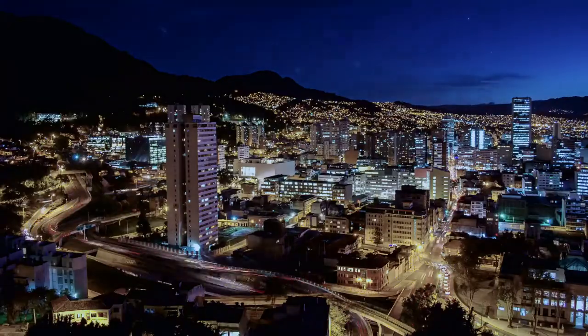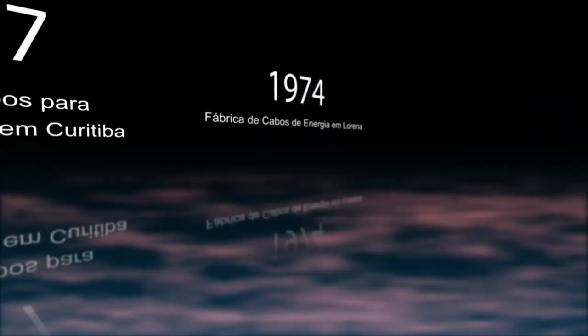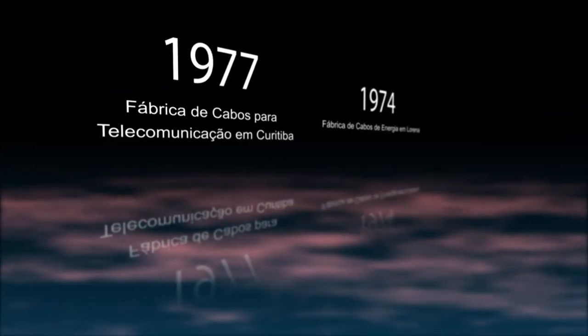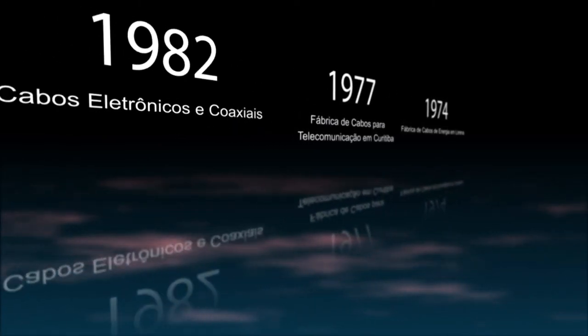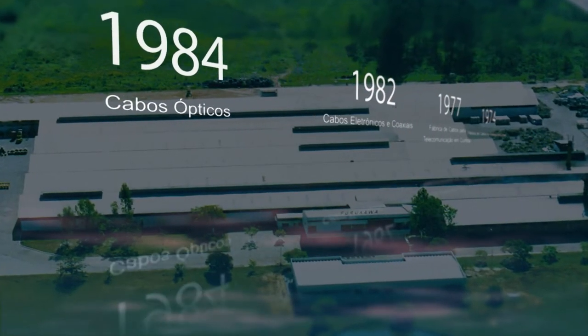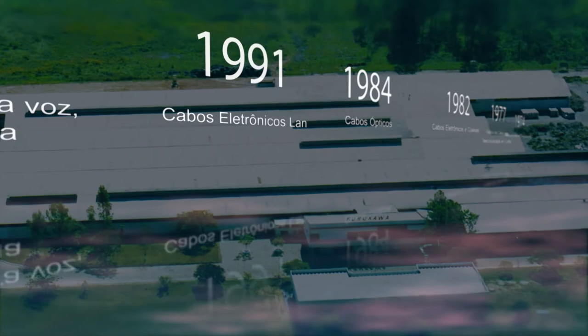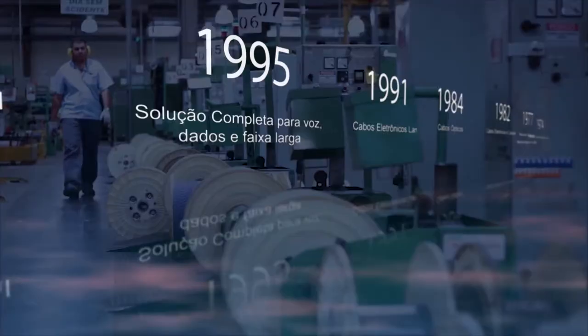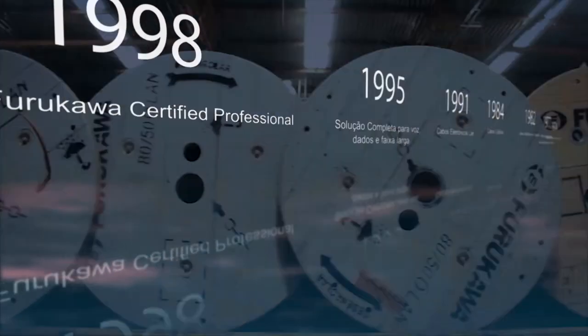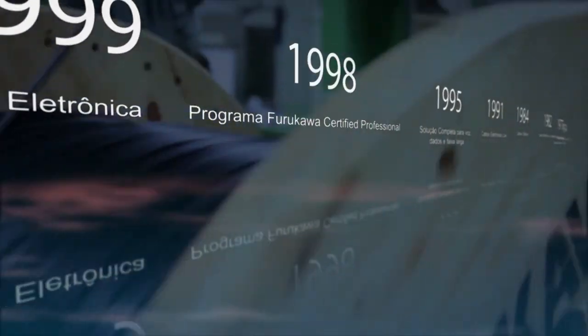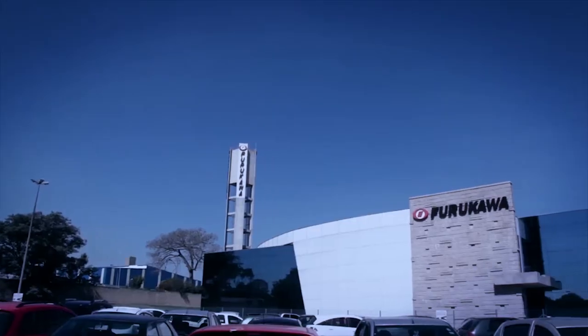In Latin America, the Furukawa Electric Group started its activities in 1974 with power cables through the Furukawa Industrial SA electric products. And in 1977, it started producing telecommunication cables in Curitiba, Paraná.